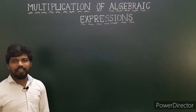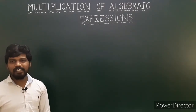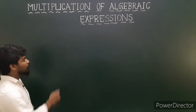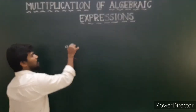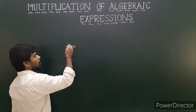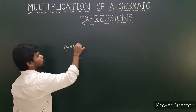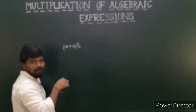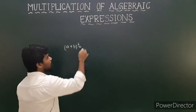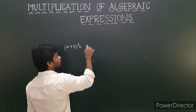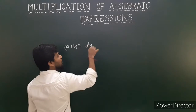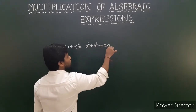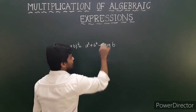Now, recall the identities we discussed in the last class. The first one: a plus b whole square means a plus b into a plus b, which is equal to a square plus b square plus 2ab. This is the first identity.